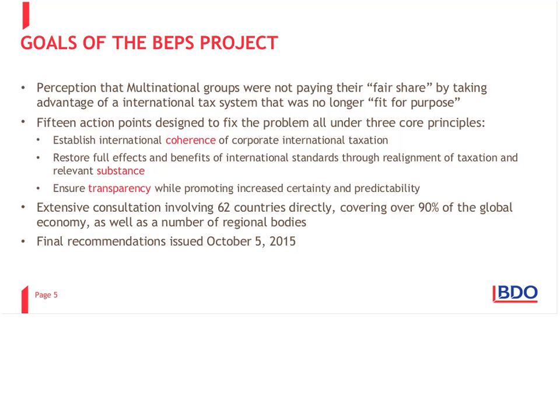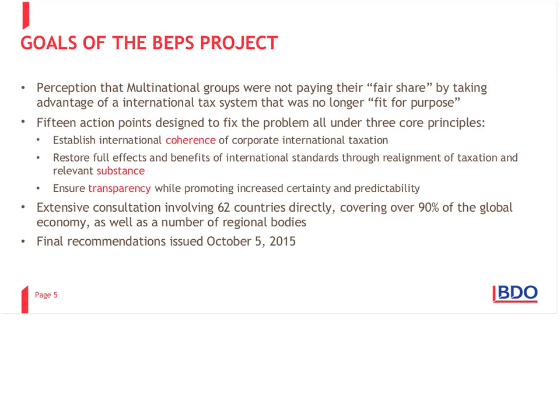In performing its work, the OECD went beyond consulting the OECD member countries. Sixty-two countries were involved directly in the consultations, including non-OECD members such as China and India, which covered over 80% of the global economy, as well as consulting with a number of regional bodies in an attempt to cover the rest of the world. The OECD believes that this process has been as inclusive a process as has ever been done on tax issues. The final recommendations were issued on October 5, 2015. The OECD has now started the focus on working with countries to actually implement their recommendations. At this point, I'd like to turn it over to Hans Nordemir, who will discuss interest deductibility and hybrid financing arrangements.